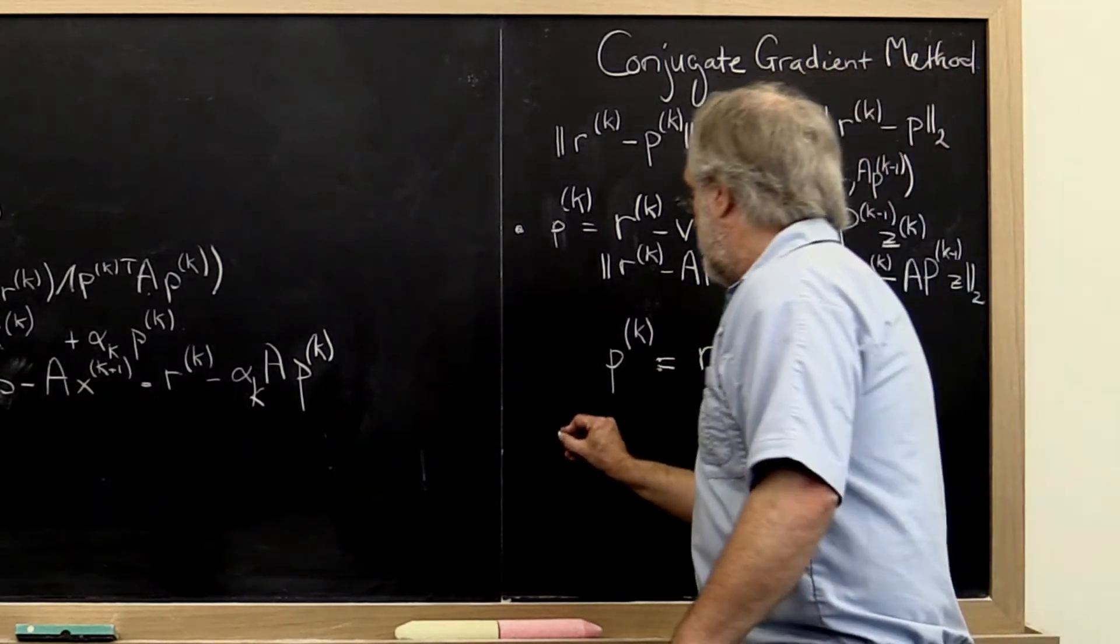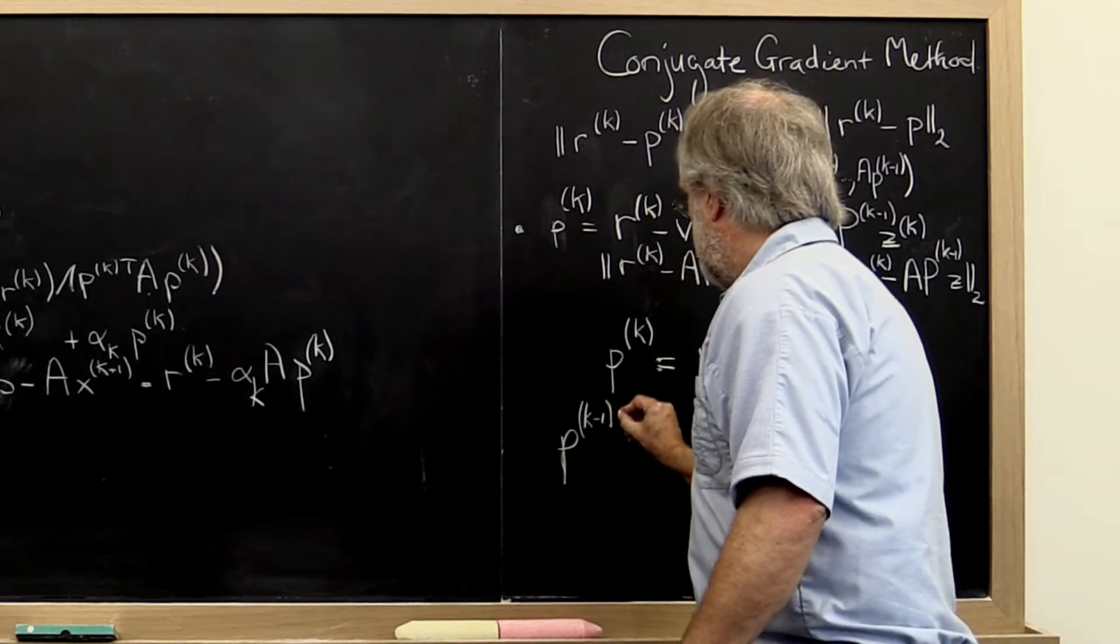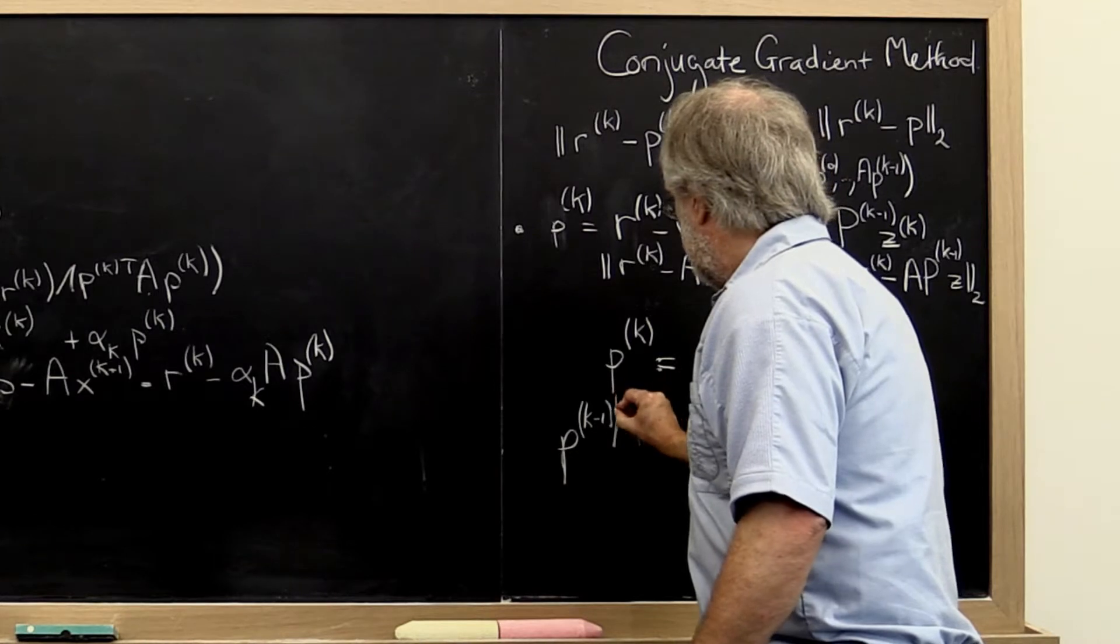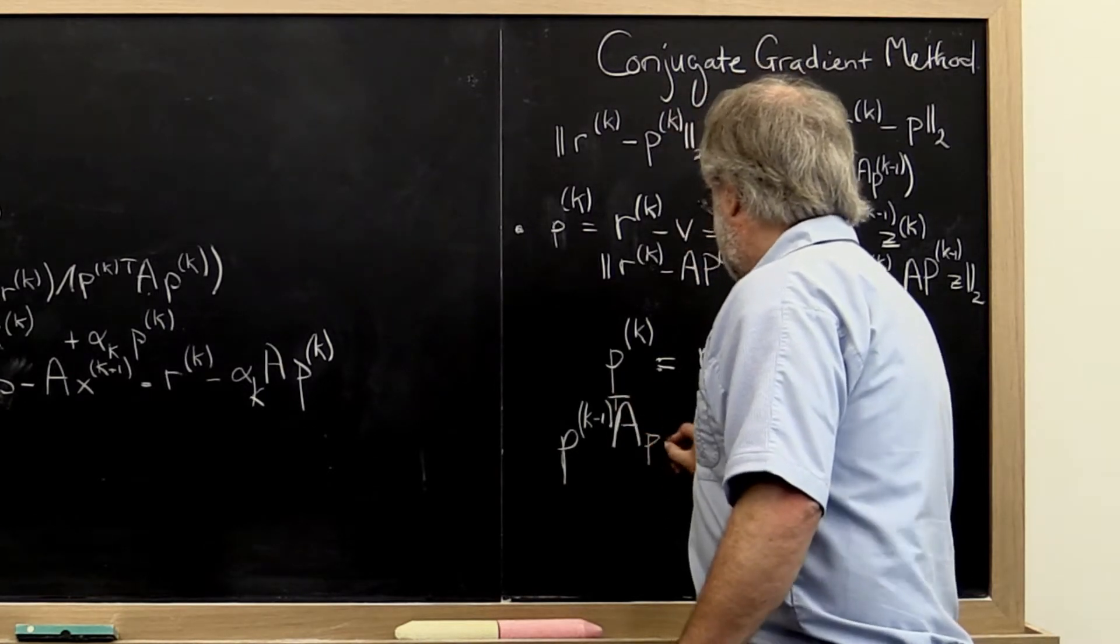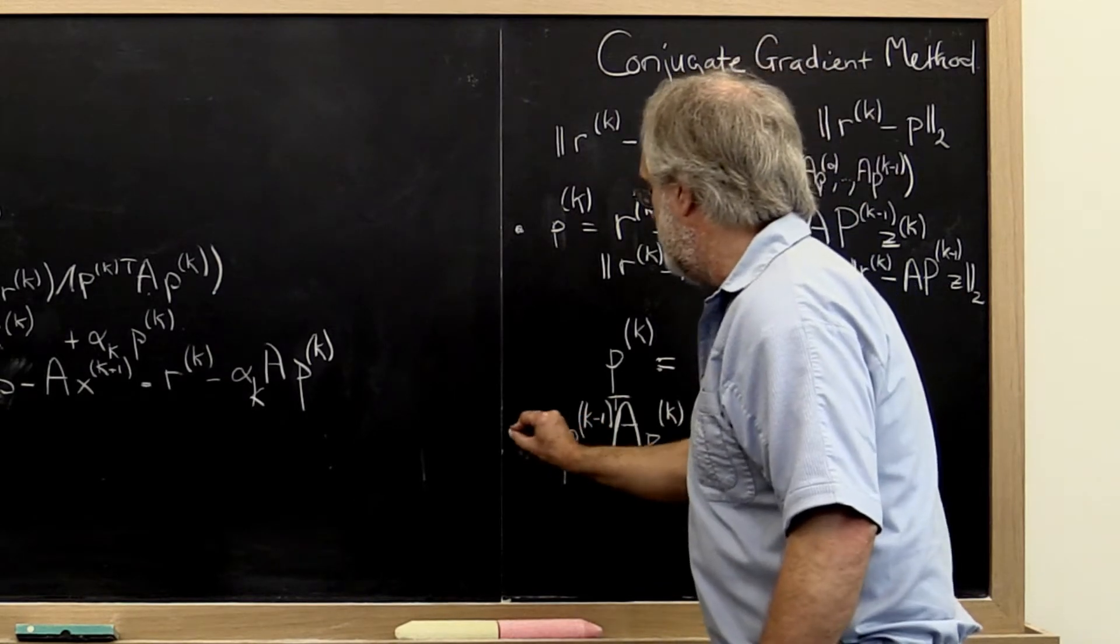So what we can do is we can say, let's take the previous search direction. Let's compute this right here. We know that that must be equal to zero.